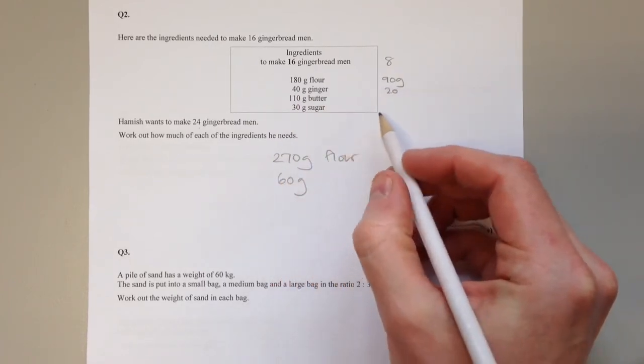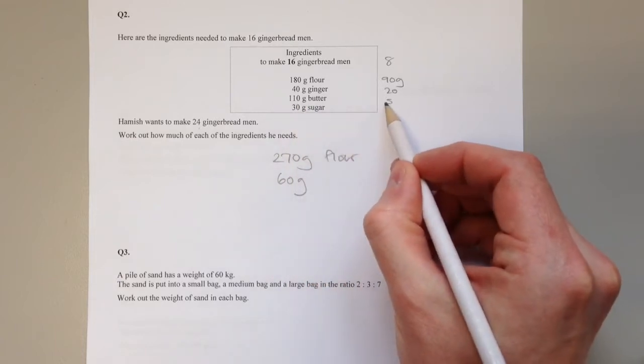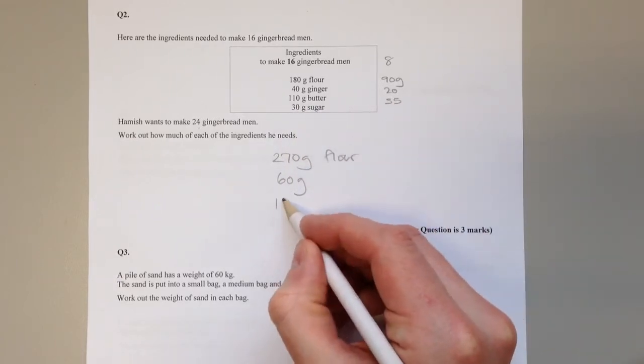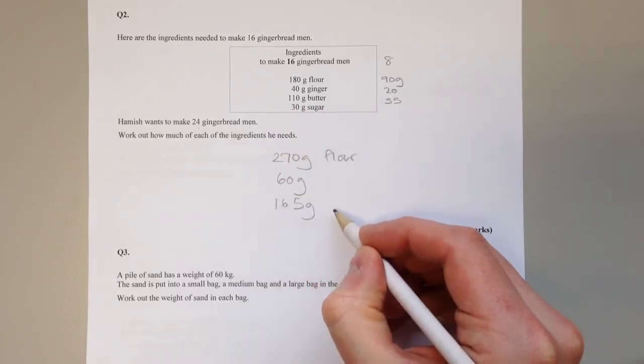Altogether for 24 gingerbread men we need 270 grams of flour. 40 halved is 20, so that will be 60 grams of ginger.